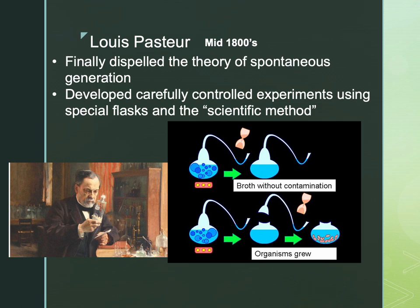Louis Pasteur finally dispelled the theory of spontaneous generation. He did this by using special flasks called gooseneck flasks, which allow air in but no dust and associated microbes. What sets him apart from other scientists at the time is that he did carefully controlled experiments using the scientific method. He had a lot of material that supported his findings, and it was reproducible research that other people could do and find the same thing. This once and for all showed that life absolutely did not come from nothing.